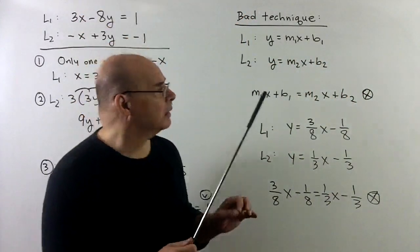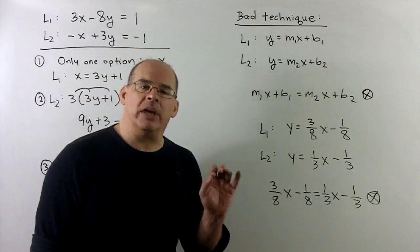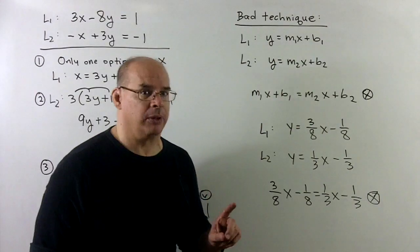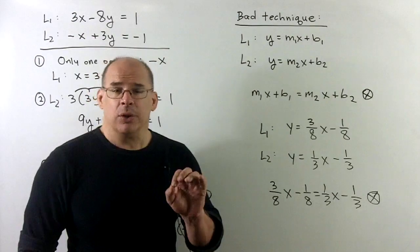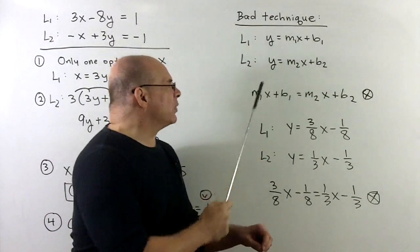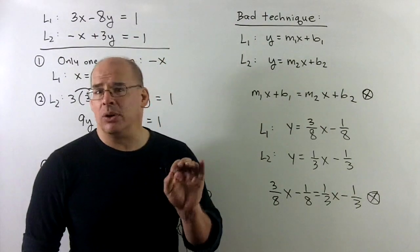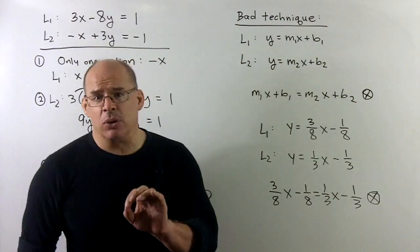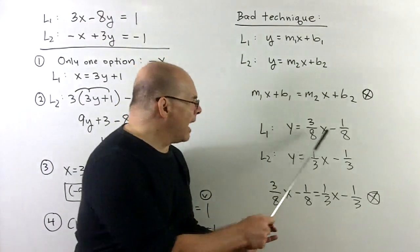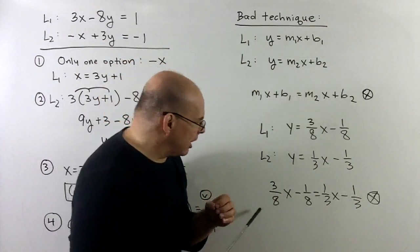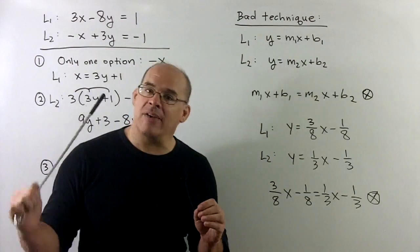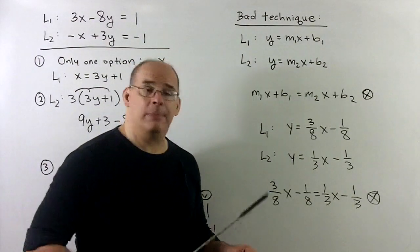Worth noting: a technique to avoid. Everything we're doing is to solve systems of linear equations in two variables while avoiding fractions as long as possible. A common mistake is to immediately solve both equations as y equals mx plus b and then set the y's equal to each other. This can introduce fractions right away. With the system we just did, the resulting equation has fractions all over it. Using the substitution method, we never needed a fraction — so this approach is best avoided when possible.